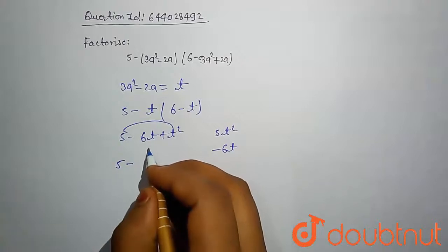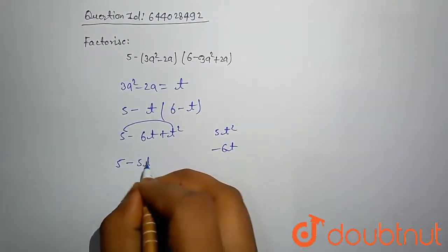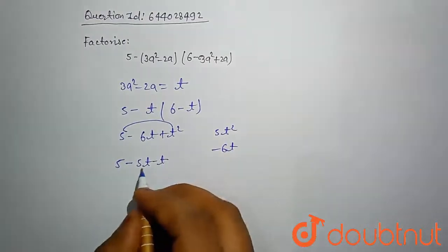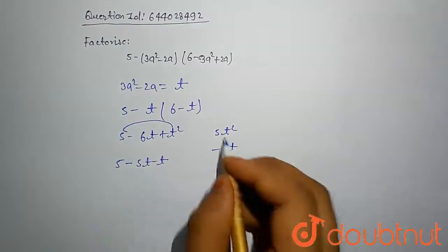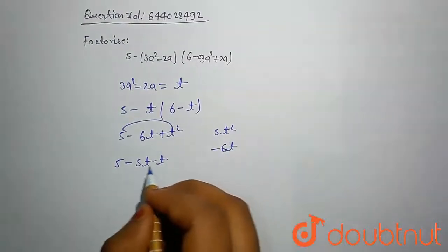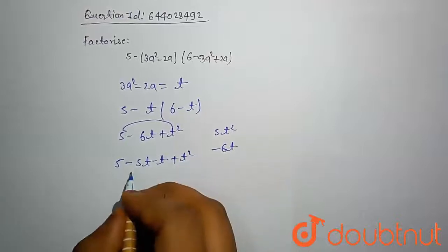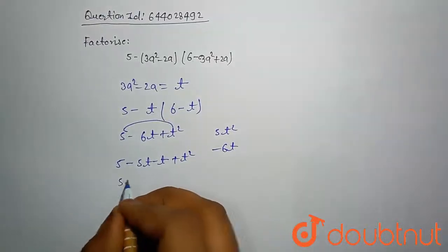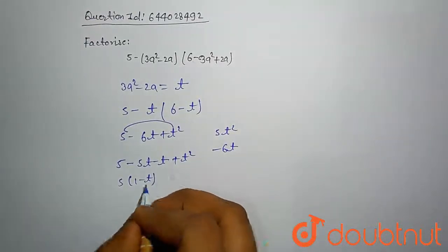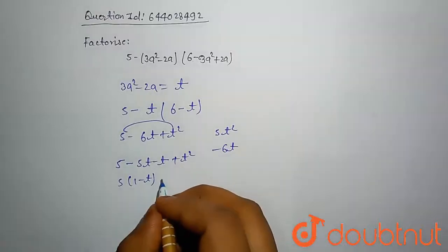Middle term computing in two terms is minus 5t minus t. Multiplication of these two terms is 5t^2 and summation of these two terms is minus 6t plus t^2. Here take common 5(1 - t) and here take common (1 - t).